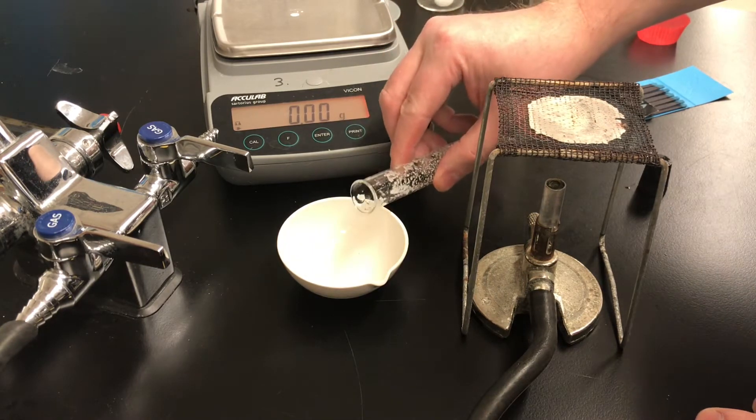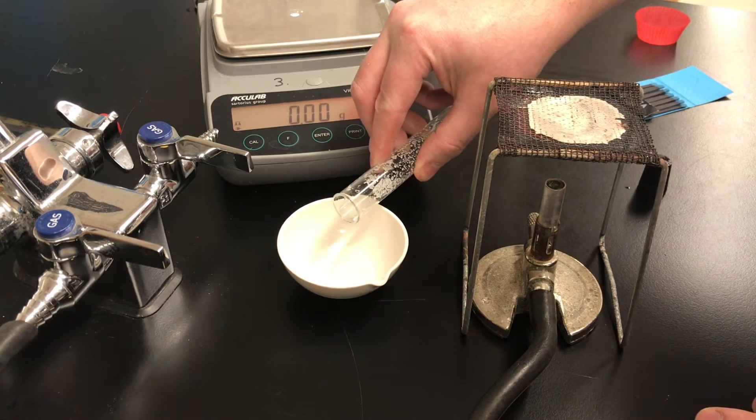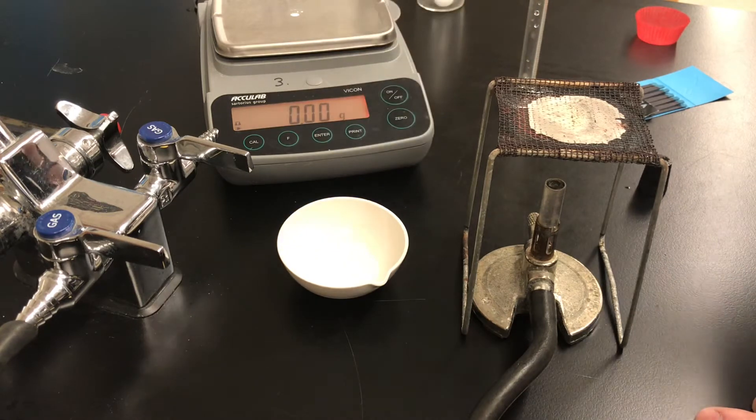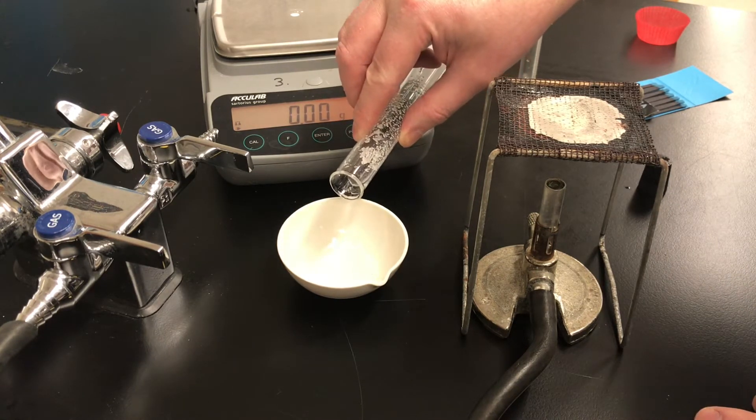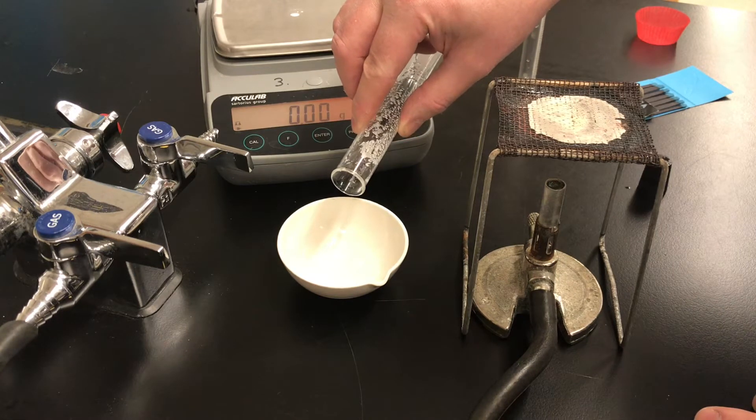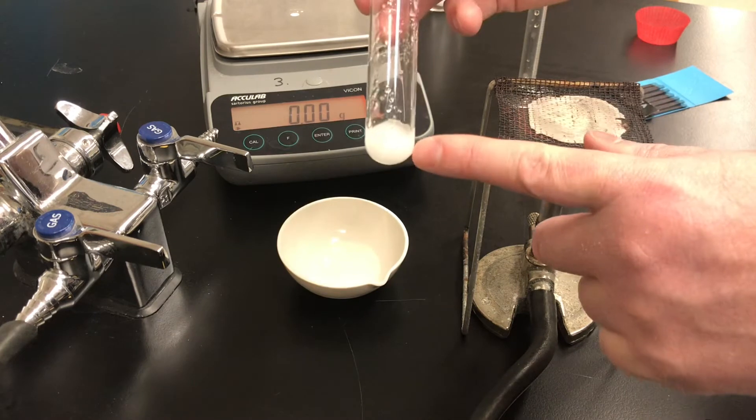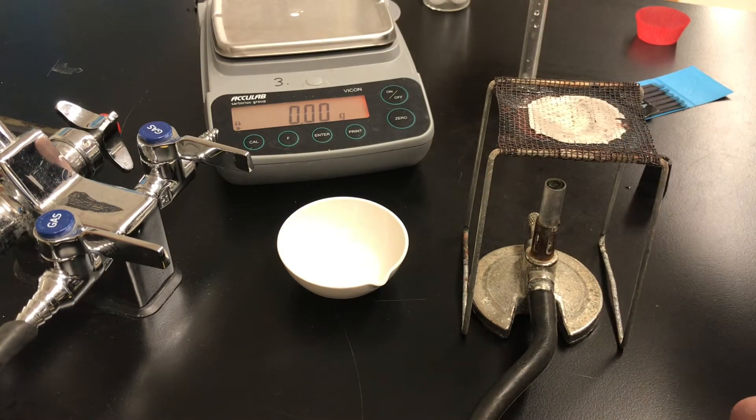Let's decant the saturated solution into the evaporating dish. You don't have to get it all out but you do need to get as much out as you can. The more you get the better but you don't want any undissolved salt to get in the dish. So there's a little bit of liquid left behind. That's okay.